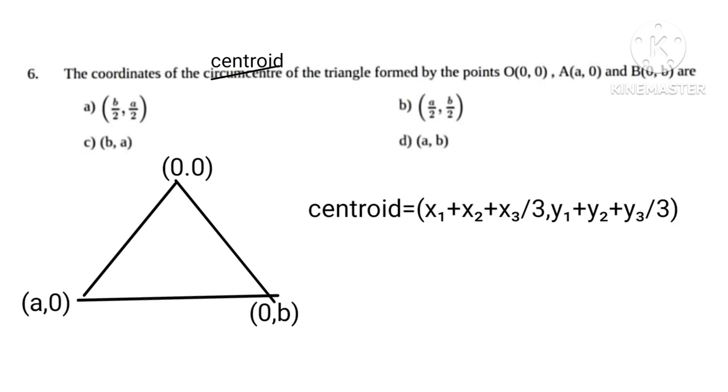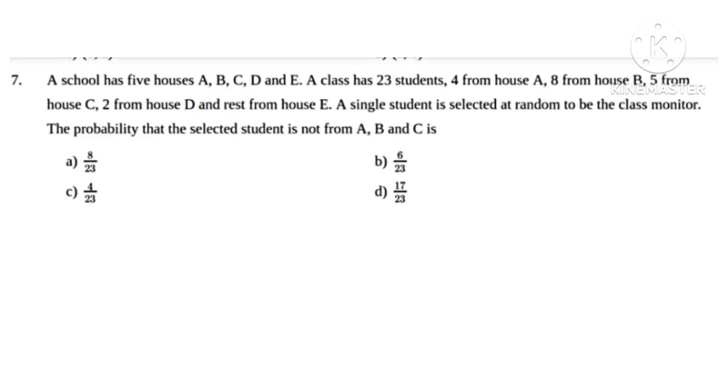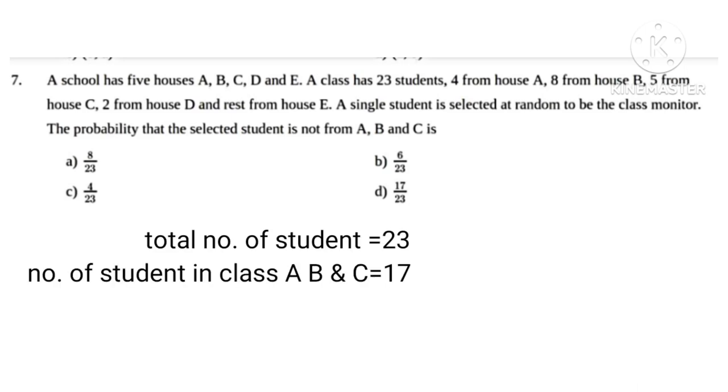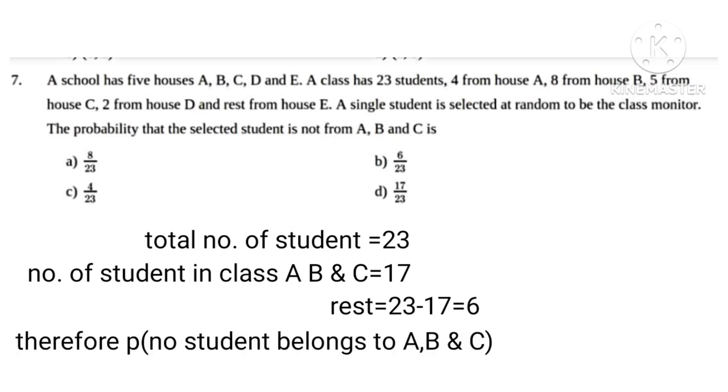Total number of students equals 23. Number of students of class A, B, and C equal 17. Rest equals 23 minus 17 equals 6. Therefore, probability of no student from A, B, or C equals 6 over 23.